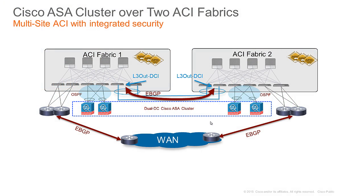Let me first start with the physical topology of our scenario. We have data center one, where we have ACI fabric one, and data center two, where we have a second ACI fabric. Those two fabrics are interconnected back-to-back with dark fibers or DWDM using a back-to-back VPC.